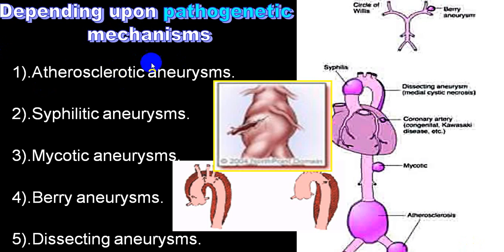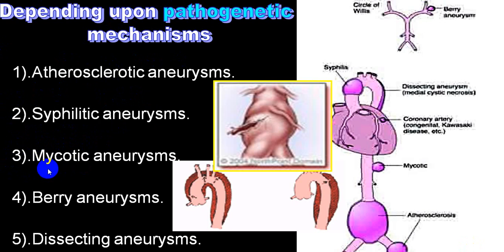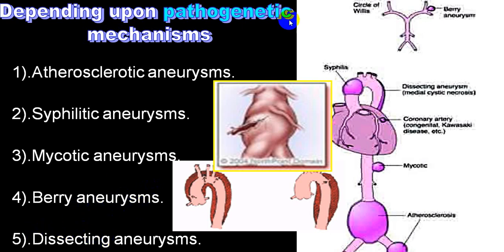Etiology-wise: atherosclerotic, syphilitic, and mycotic. In infective endocarditis, bacterial emboli produce damage to the arterial wall and end up as an aneurysm — that is called a mycotic aneurysm. Berry aneurysms are usually congenital. When an aneurysm ruptures, we call it rupture of aneurysm; if the aneurysm dissects out, we call it a dissecting aneurysm.